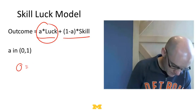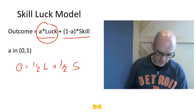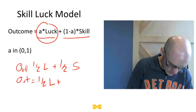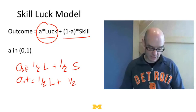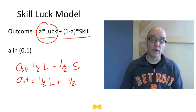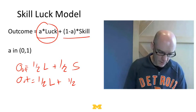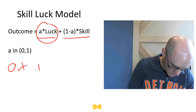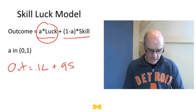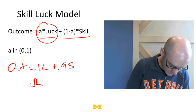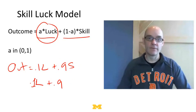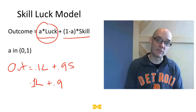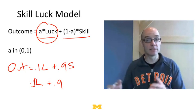For example, suppose outcome equals one-half luck plus one-half skill, and someone's skill equals one-half. Their outcome is one-half luck plus one-half, so you'll see huge jumps — sometimes one, sometimes one-half, sometimes a quarter. Alternatively, if the outcome were 0.1L plus 0.9 times skill, and their skill was one, you'd see outcomes like 0.95, 0.85, 0.87, 0.92 — a much tighter distribution. So by looking at lots of data on athletes and firms, you can figure out whether a domain is high skill, like the 100-meter dash, or involves more luck, like possibly darts.